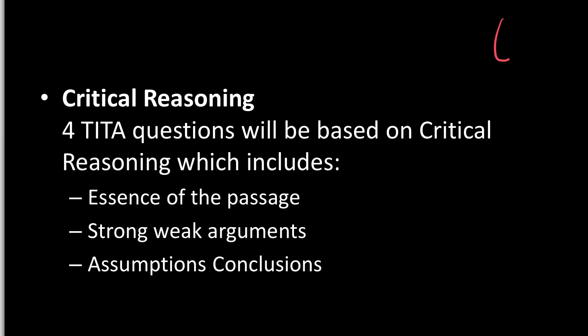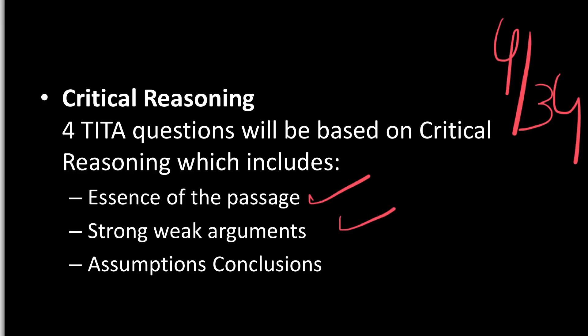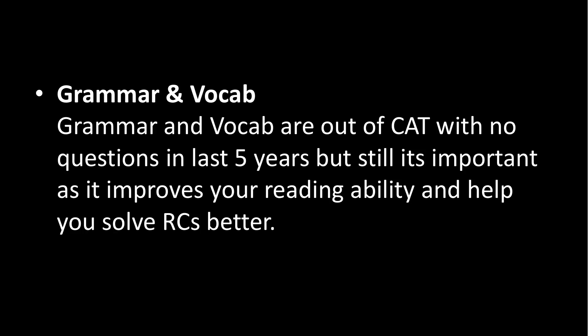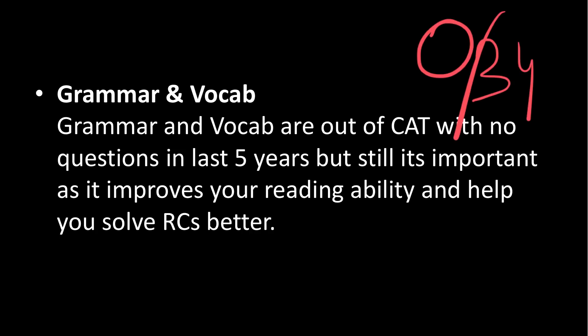Critical Reasoning: four questions — the last four out of 34 — are going to be based on essence of the passage, strong argument, weak argument, statement assumption, and similar things. Grammar and vocab is out of CAT from the last five years, but you should still do a few grammar and vocab questions to improve your overall reading ability. Zero questions are based on grammar or vocab.